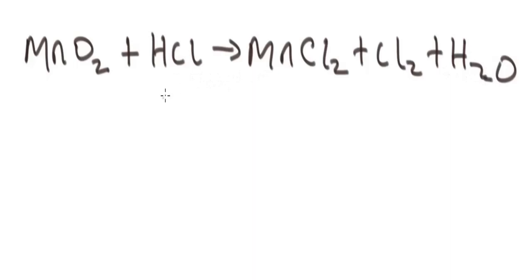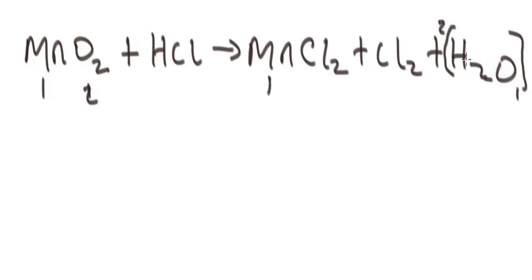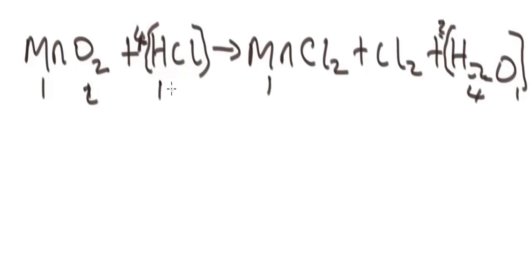As usual, let's apply atom count. At the left, we have one atom of manganese. At the right, one atom of manganese — so manganese is balanced. Let's check oxygen. We have 2 atoms of oxygen at the left, but 1 atom of oxygen at the right — it's not balanced, so we add 2 here. Remember, this 2 multiplies everything in this compound. Now let's balance hydrogen. Hydrogen at the left — because these 2 multiplied the 2 at the base of HCl to make it 4, we need to add 4 here. So we now have 4 atoms of hydrogen at the left.